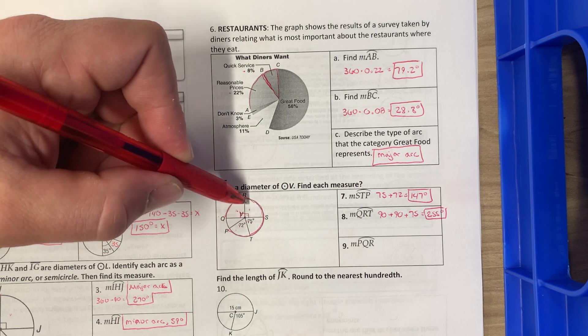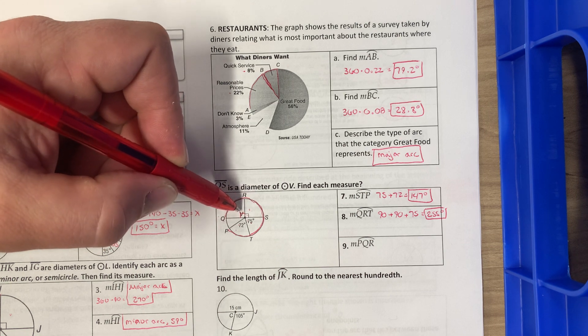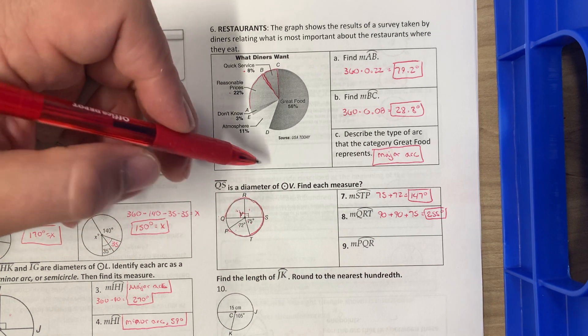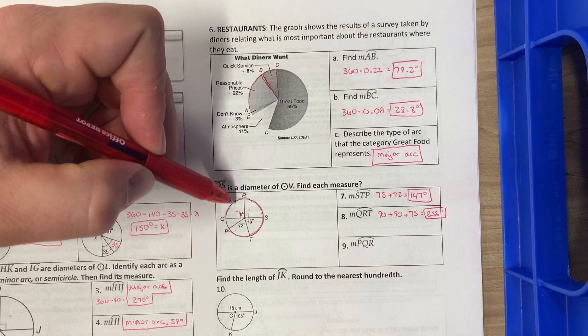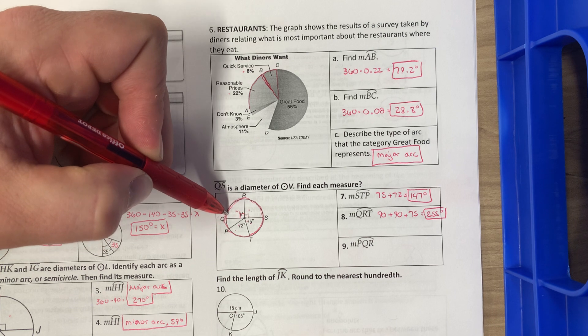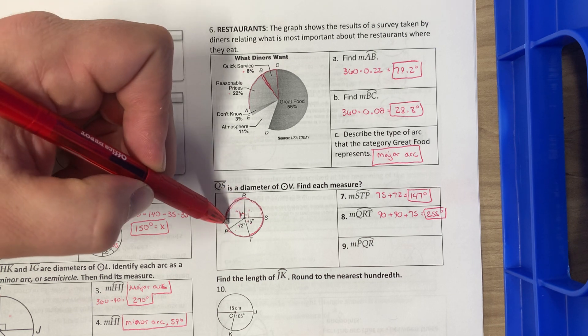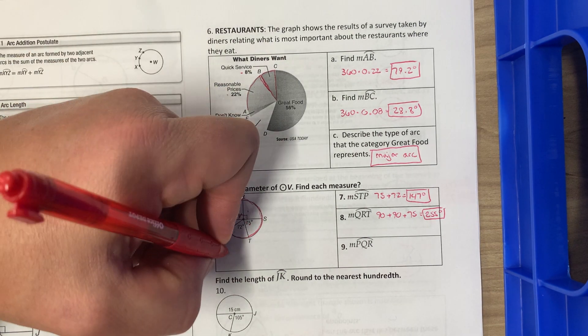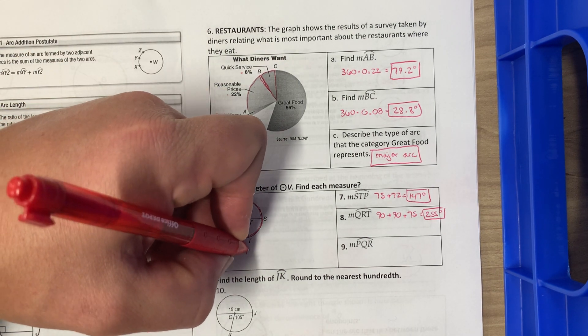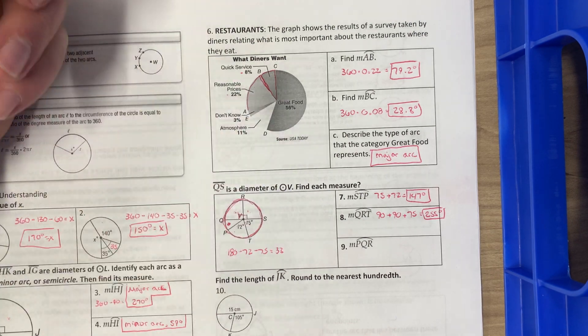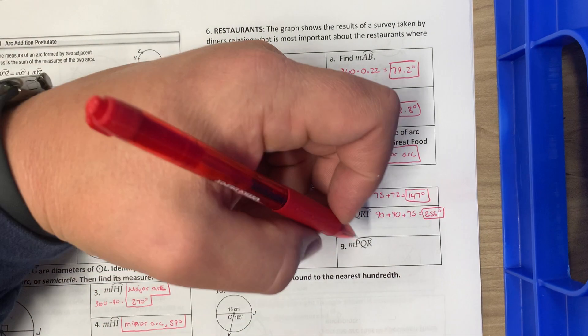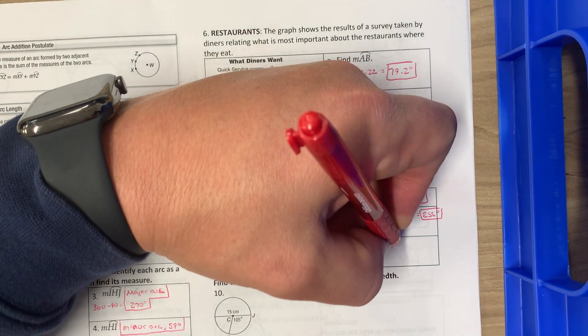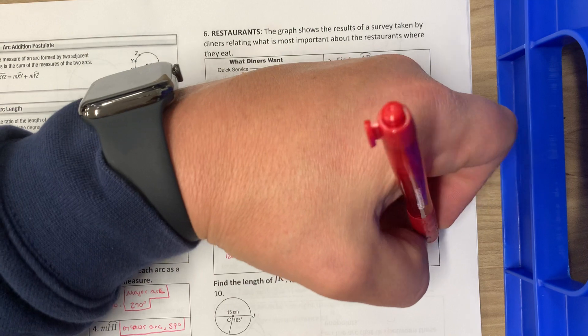So this half, this whole half is 180. 180 minus 90 is 90. And the last one, PQR. So we have this guy right here. Same kind of concept to find this angle right here. I just did 180 minus 72 minus 75, which is 33. So all I did was 90 plus 33, that equals 123.